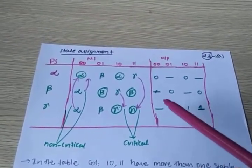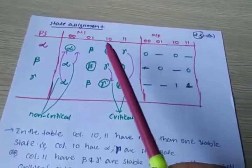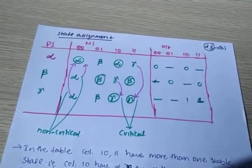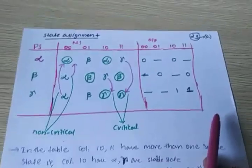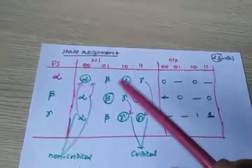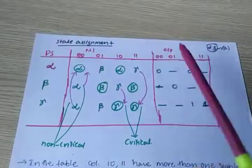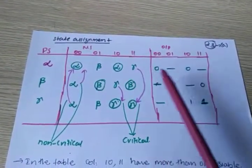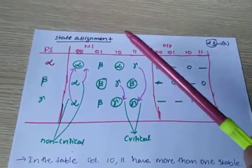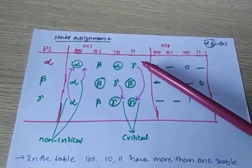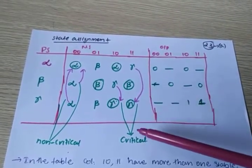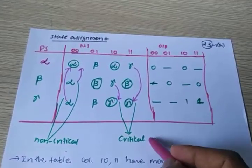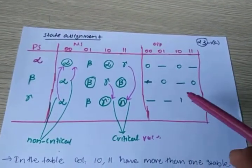In the previous class I discussed the state assignment, which is now completed. The seven variables are reduced to three: alpha, beta, and gamma. The corresponding state table and state assignment are complete. Now look at columns 1-0 and 1-1 — this is where a critical race condition is created.